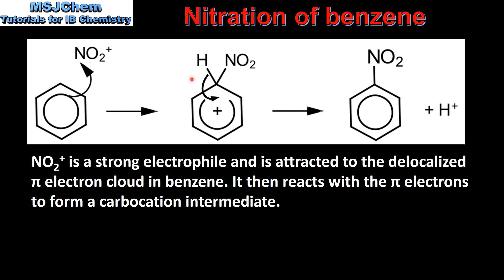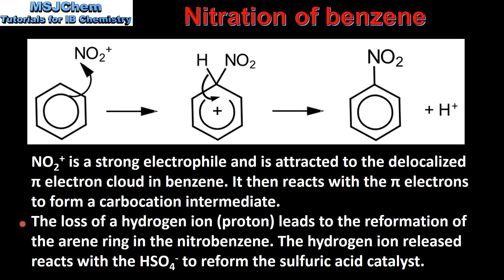The nitronium ion then reacts with the pi electrons to form a carbocation intermediate, which we can see here. This curly arrow shows a movement of a pair of electrons from the carbon to hydrogen bond back into the benzene ring. The loss of a hydrogen ion leads to the reformation of the arene ring in the nitrobenzene. The hydrogen ion released then reacts with the HSO4− ion to reform the sulfuric acid catalyst.